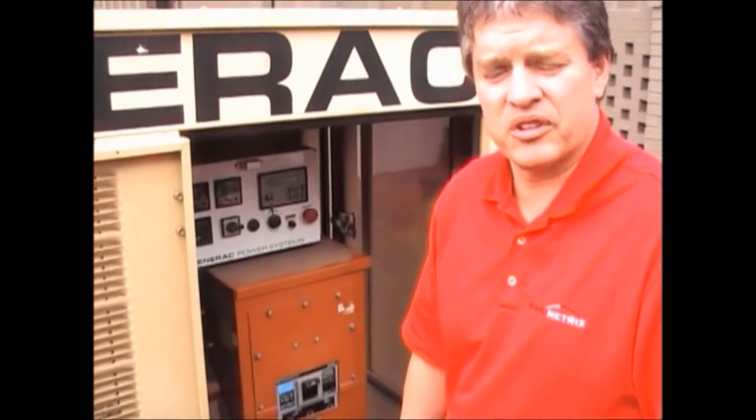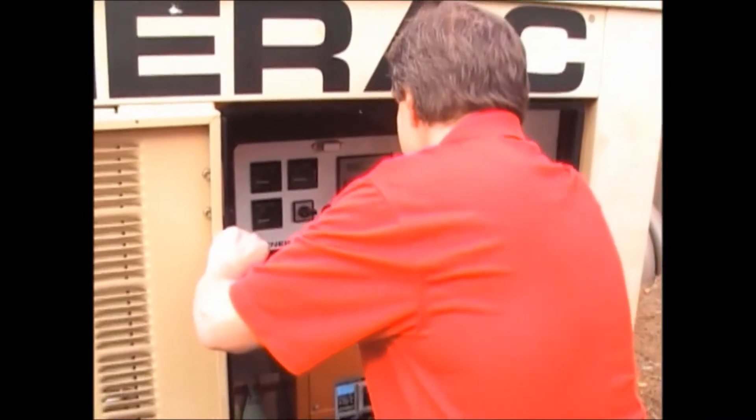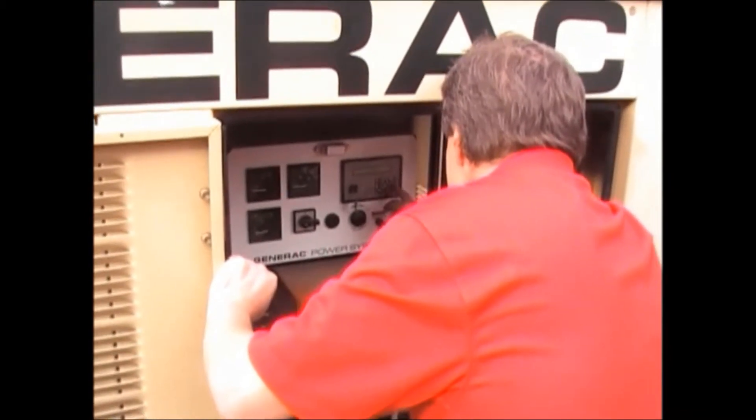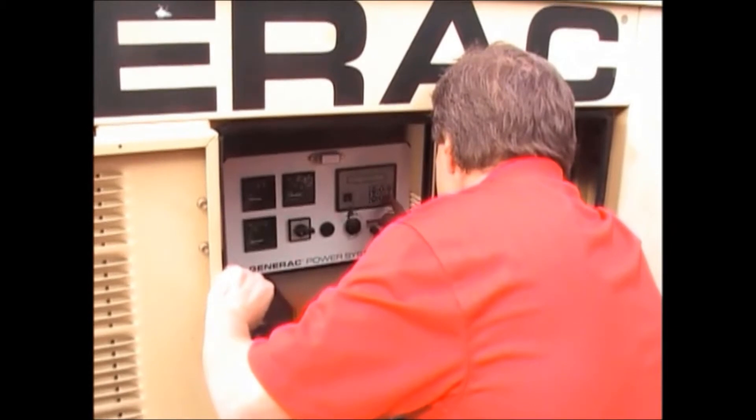First thing we're going to do is turn the unit to the off position and then we're going to go through the steps of assigning the programmable relays. So now that we've taken the machine out of auto, we've made it safe for us to work on it.